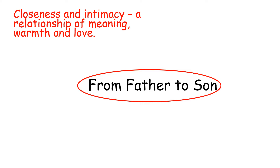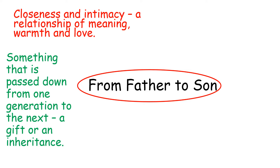Let's begin our analysis with the title, From Father to Son, and it conjures particular imagery that I think is very powerful and very striking. From Father to Son would normally be indicative of a closeness or an intimacy, an unbreakable bond between two people who are always going to be connected by the fact that one has created the other. Normally that would be seen as a relationship of meaning, or of warmth, or of love, but as we read through the poem we can see that perhaps some of that warmth and love has been eroded over time.